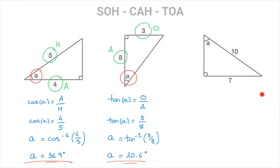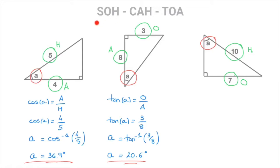We now look at the third and final example. Again, our starting point is to summarize the information we're given relative to this interior angle A. Looking at this triangle, and in particular angle A, we can see that we're given its opposite side length — that's the 7, which I mark with an O — and we're also given this right-angled triangle's hypotenuse, that's the 10, which I mark with an H. We look through SOH, CAH, and TOA for the only one containing the letters O and H. The only one with O and H is SOH.